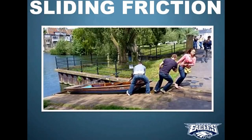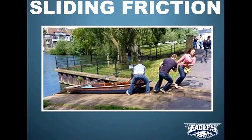Now as an object starts sliding across the surface, it turns from static into sliding friction. Sliding friction is actually weaker than static friction. You can feel this if you're pushing a heavy box — it takes a lot of force to overcome static friction and get it going, but once you actually get it sliding, then it's easier to move. That's because sliding friction is a little bit weaker than static friction.